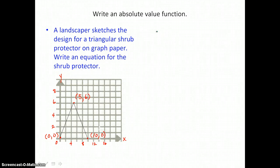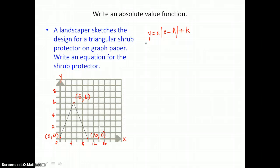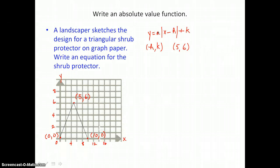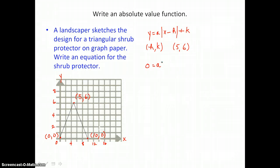When we write the equation for this v-shape, we use standard form: y equals a times the absolute value of x minus h, plus k. Since h, k is our vertex, we can pick that out right away — h equals 5 and k equals 6, and we plug those into our equation. We still need to find the a value, so we'll use one of the known points on the v-shape, either 0, 0 or 10, 0. Using 0, 0 — we substitute x equals 0 and y equals 0 into the equation to solve for a.